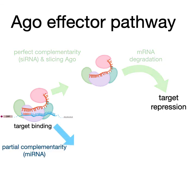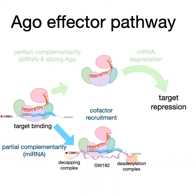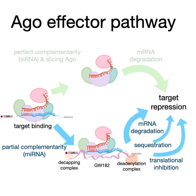With microRNA, however — at least for mammalian microRNA — you only have partial complementarity, so Argonaute can't slice that target, even if it's AGO2. Instead, it calls for help and binds to a long scaffolding protein called GW182, which brings in decapping and deadenylation complexes that remove the protective ends from the mRNA so it can get chewed away. You can also get translational inhibition and sequestration — all of these leading to target repression.